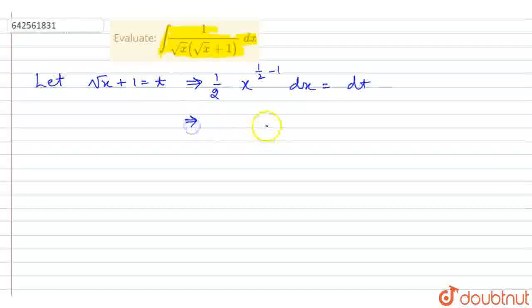So, this implies that we have dx upon—now, x raised to power half minus 1 is equal to x raised to power minus half. So, this will be equal to, when it comes in denominator, the sign of its power gets changed. So, the power of x is equal to half.